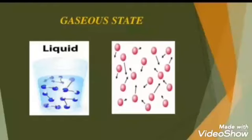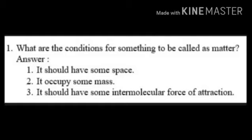To summarize this lesson: matter is anything which occupies some space and has some mass. The physical nature of matter shows particles are tiny in size. The four characteristics of particles of matter are: first, particles are very, very small; second, particles have space between them; third, particles are constantly moving; and fourth, particles of matter attract each other. We also briefly discussed the states of matter.